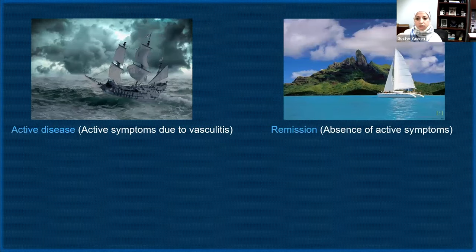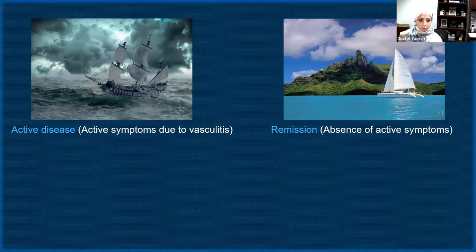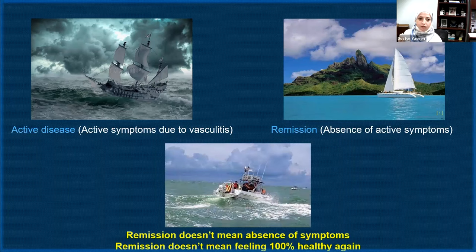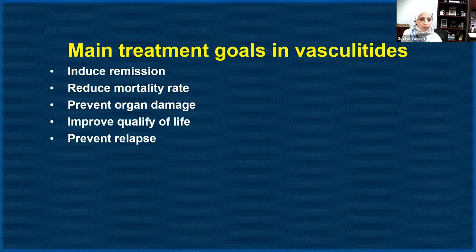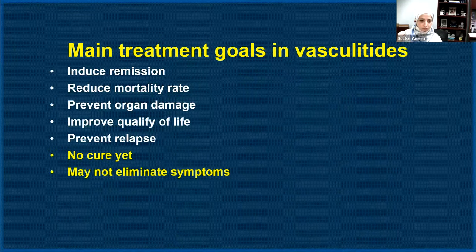Active vasculitis means active symptoms due to overwhelming inflammation in the blood vessels. Remission means absence of active symptoms related to active vasculitis, but unfortunately remission does not mean absence of all symptoms, does not mean you will be cured, and does not mean you will feel 100% healthy again as before vasculitis onset. The main treatment goals are to induce remission, control inflammation, prevent further progression, reduce mortality, prevent organ damage, improve quality of life, and prevent future relapse — but there is no cure, and treatment may not resolve symptoms completely.